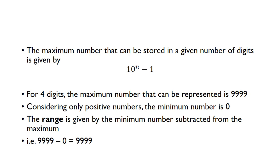The maximum number that can be stored in a given number of digits is given by 10 to the power of n minus one. So for four digits, the maximum number we can represent is nine thousand, nine hundred and ninety-nine. Considering only positive numbers, the minimum number is zero, and the range is given by the minimum subtracted from the maximum — so for four digits, the range is 9,999.